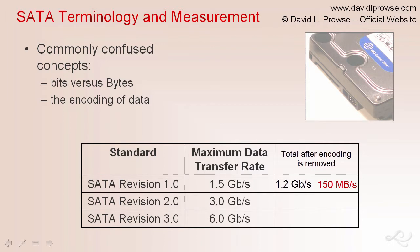The encoding data is discarded once the data is stored. The same holds true for the other versions of SATA. For example, revision 2 goes from 3.0 gigabits per second down to about 2.4 gigabits per second, which roughly equals 300 megabytes per second. And SATA 3.0 has a maximum data transfer rate of 6.0 gigabits per second — remove the encoding data and you get 4.8 gigabits per second of real data, which converts to approximately 600 megabytes per second.